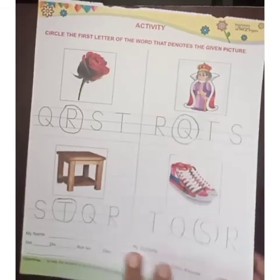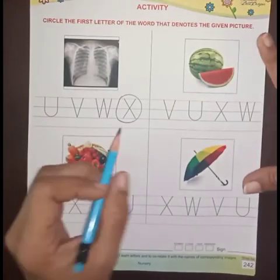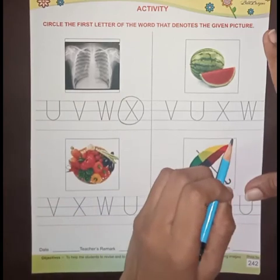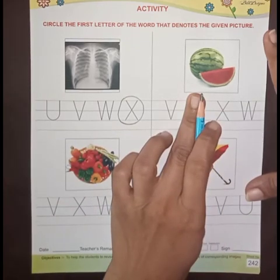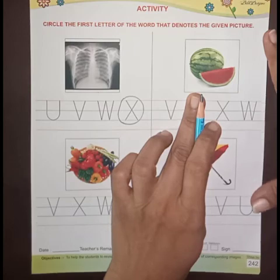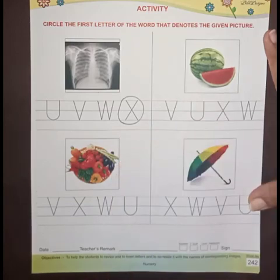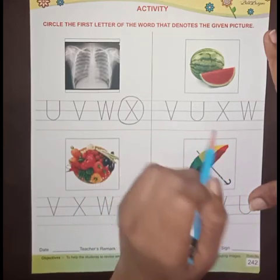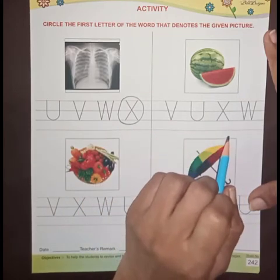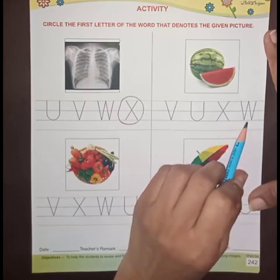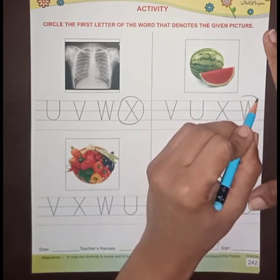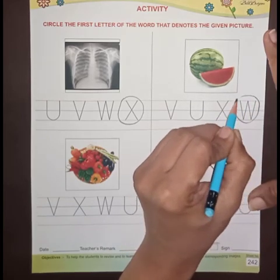Same way we will do X for X-ray. Now, which picture is this? This is a watermelon. Watermelon comes from V? No. U? No. X? No. W. Yes. W for watermelon. So we have to circle the letter W.